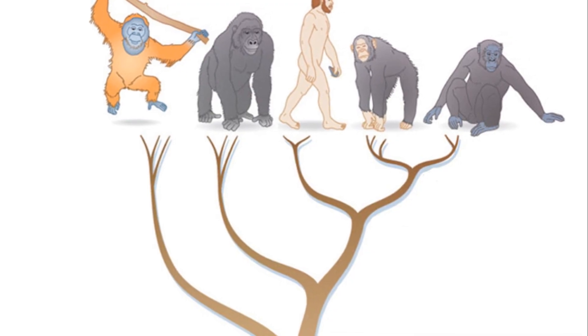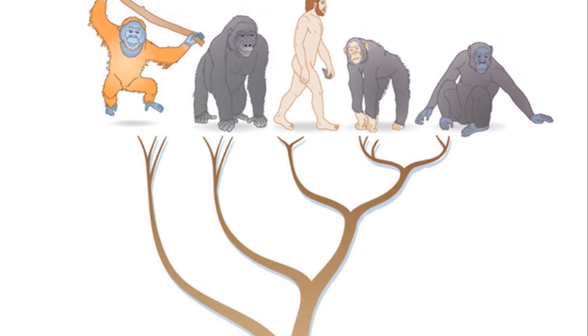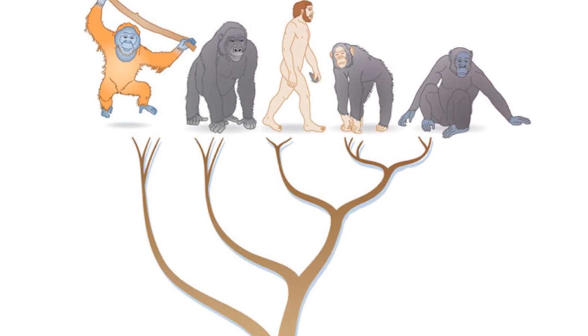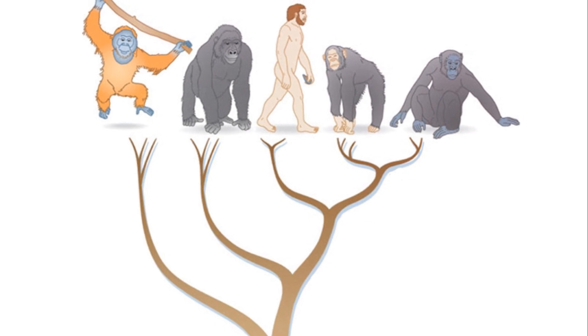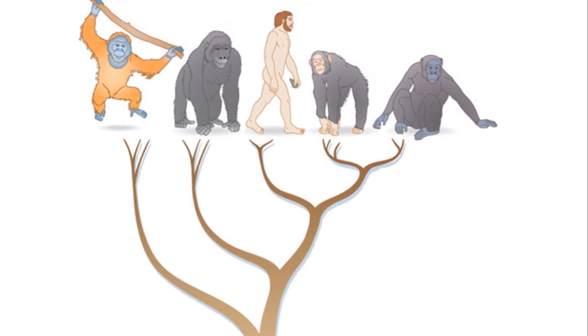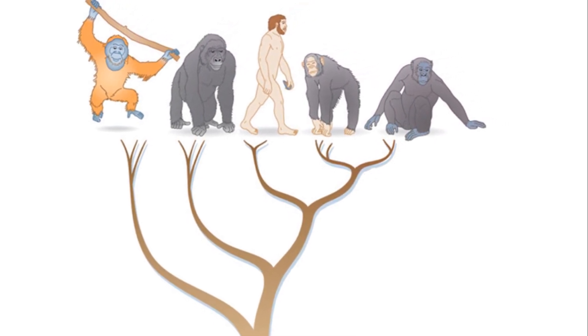Next, we have family. For example, the Hominidae family within the order Primates includes humans and our closest extinct ancestors.